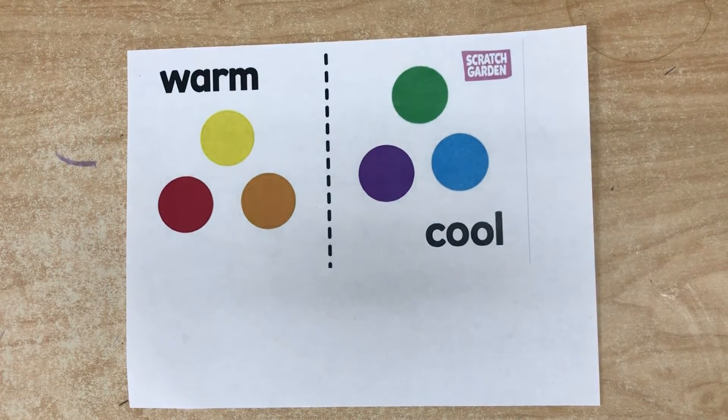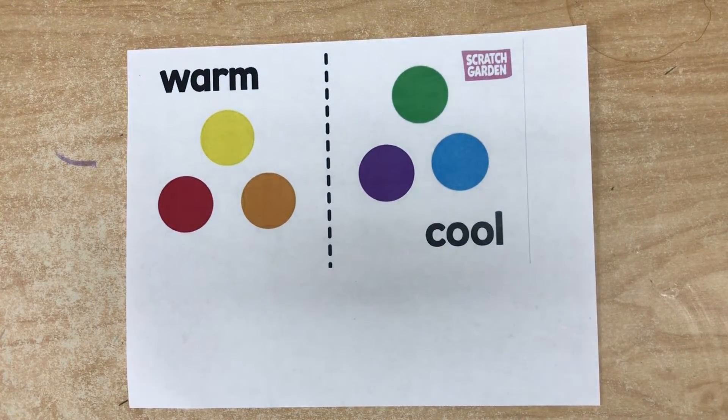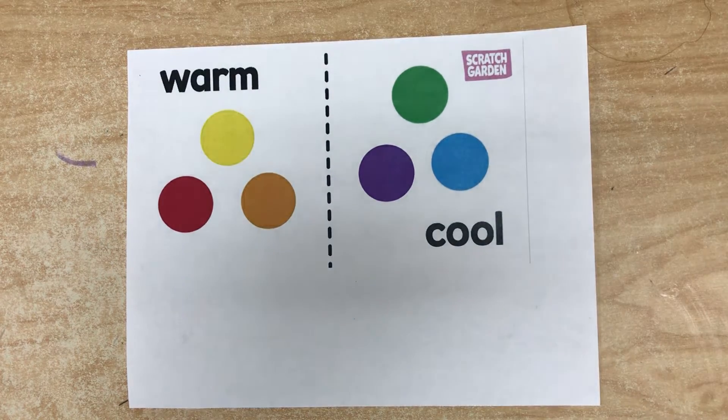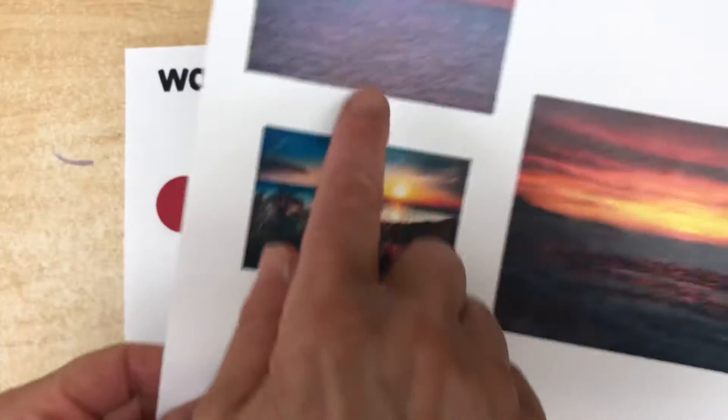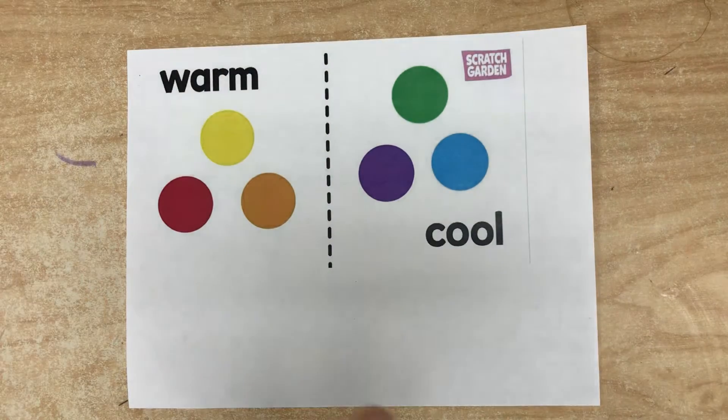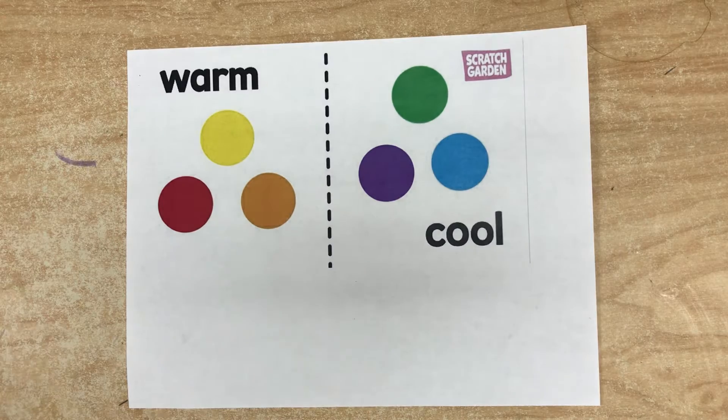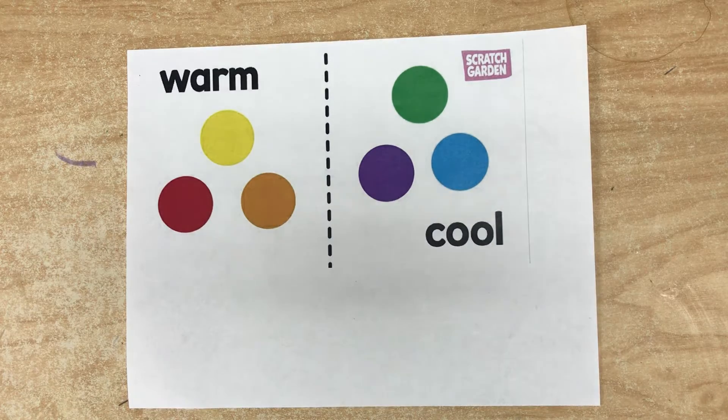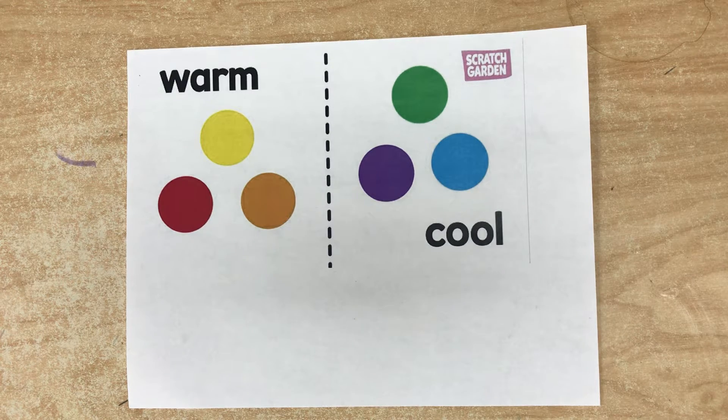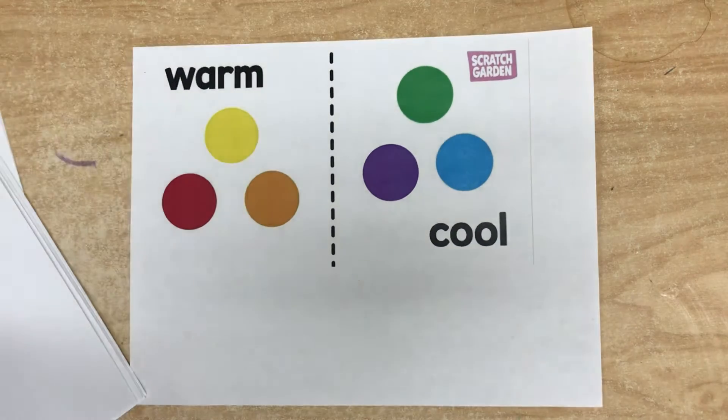Before you decide how you are going to draw your sunset with warm colors and seascape, meaning the ocean or sea, with cool colors, I'll show you quickly a few different ways. Then you choose the one you are going to use, or you can make it up your own way. I did so many different kinds.